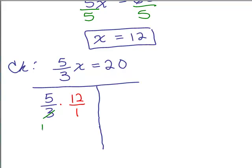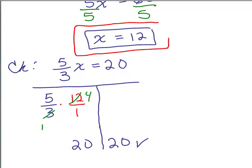So 3 goes into the 12 four times. I get 20 on the left, 20 on the right. If we get the same number on each side, then this is the correct answer, and often you see the correct answer written in a solution set that looks like that.